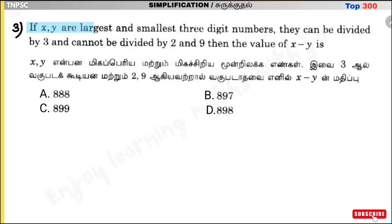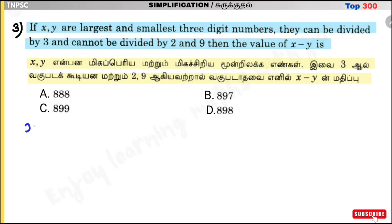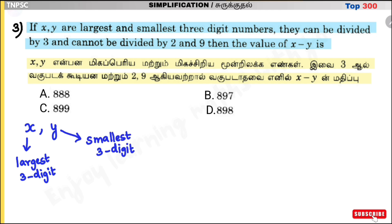Question number 3. If x and y are the largest and smallest 3-digit numbers that can be divided by 3 and cannot be divided by 219, then find the value of x minus y. The least three-digit number is 100 and the largest three-digit number is 999.